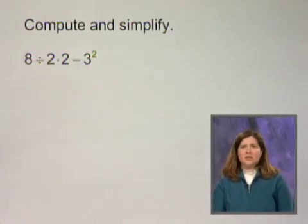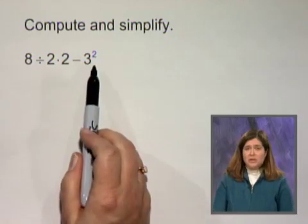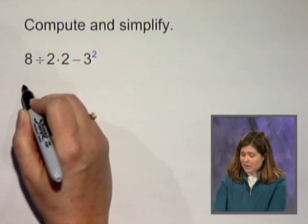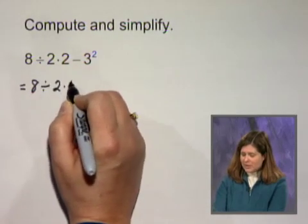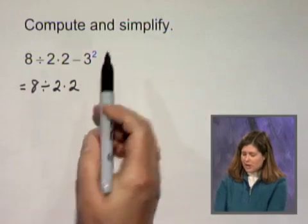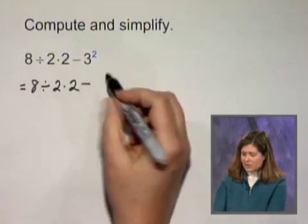In the order of operations, we always simplify exponential expressions first. I'm going to copy the entire expression except for the parts that I simplify will change. I have 8 divided by 2 times 2 minus 3 squared is 9.